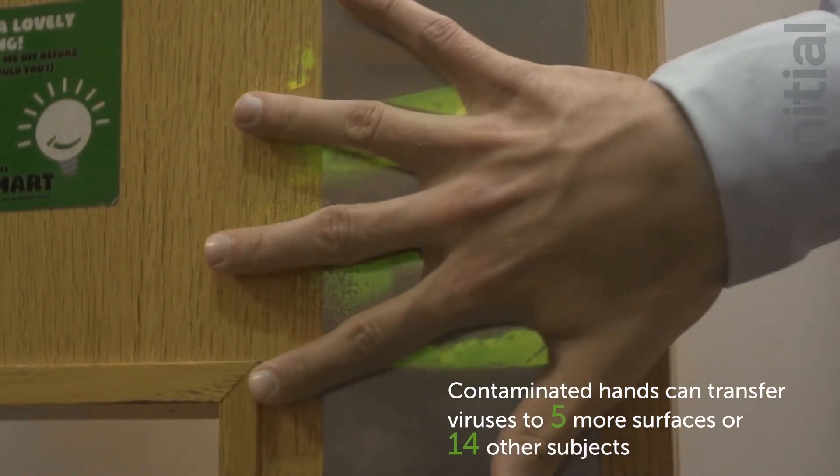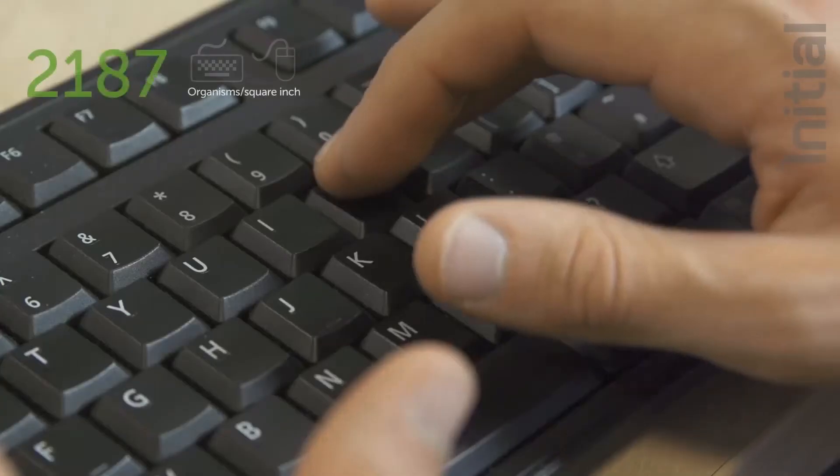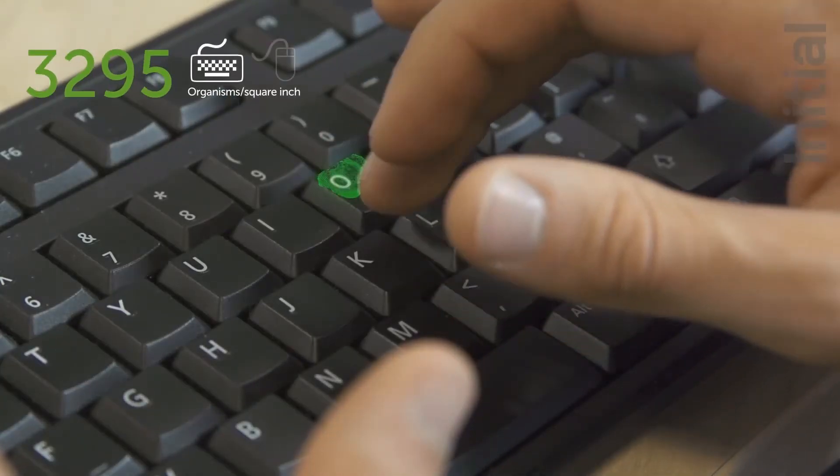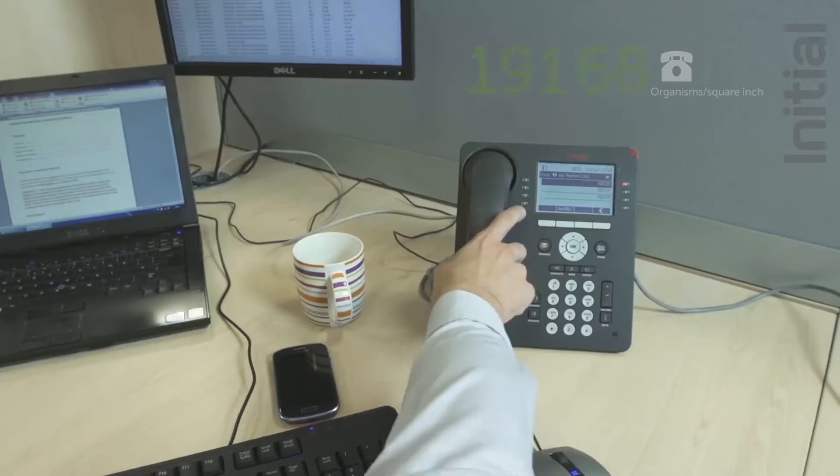We know from studies that around 3,000 organisms can be found per square inch on a keyboard and over 1,600 on a computer mouse.